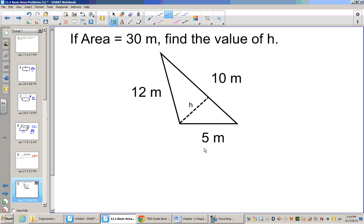Now if we come to this problem, if we know the area is 30 meters squared, let's find the value for h. Now h is perpendicular with 10, so 10 will be the base and h will be the height. The formula for the area, base times height divided by 2.